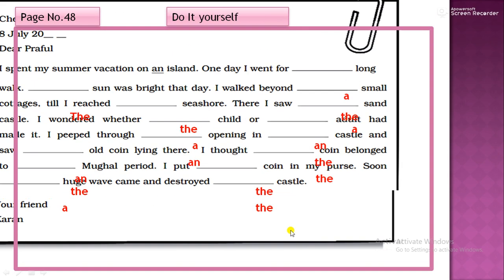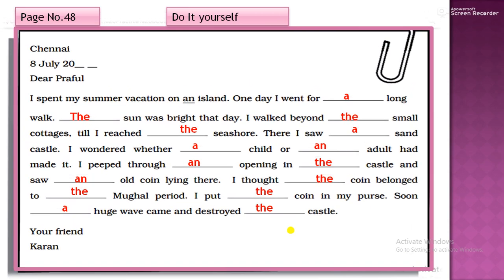Next. At page 48. Exercise. Do it yourself. Now students, you know how to use the articles. So let's practice more about it. So this is a letter. And question is, Karan has a memorable experience during his summer vacation last summer. On his return, he wrote his experiences to his friend. And his friend name is Praful. Question is given on your book. So at page 48. So let's get started for this.